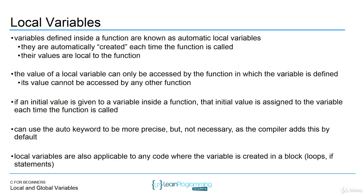Local variables are also applicable to any code where a variable is created in a block — loops or if statements. A block is anywhere there are brackets: in functions, if statements, or loops. If you create a variable inside a block, you can only use that variable inside that block. If you try to access it outside the block, the compiler will give you an error. The values and data are only applicable to that block — you're not sharing any data.